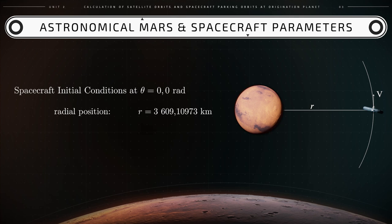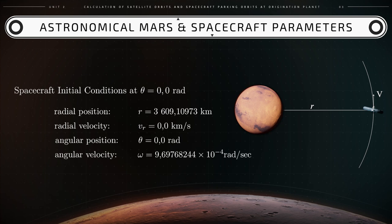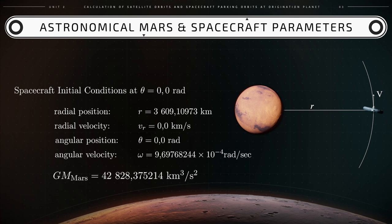The remaining initial conditions are the following ones: vr equals 0 km per second, theta equals 0 radians, and omega equals 9.69 × 10⁻⁴ radians per second. From NASA's Horizons system we can obtain the magnitude of GM — the gravitational parameter of Mars — which equals 4.2828 × 10⁴ km³ per second squared.